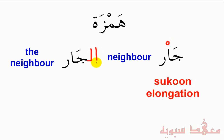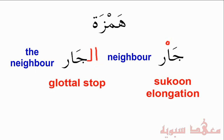So we pronounce this as 'Al-Jaar.' Notice the sound at the beginning — 'A,' 'Al-Jaar.' That 'A' sound, which in English is called a glottal stop, is actually the Hamza. It's not the Alif.